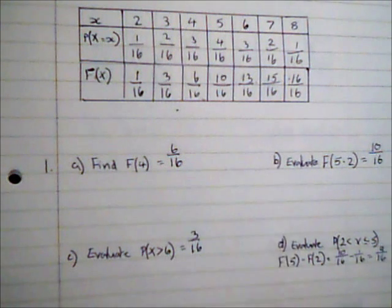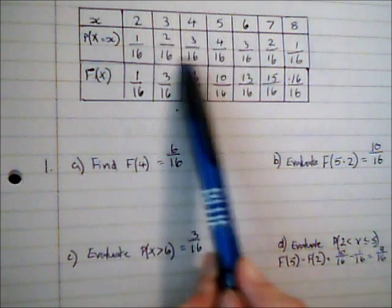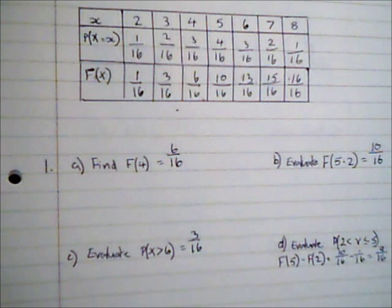Alternatively I could just look at the values that were 3, 4 and 5. So 3, 4 and 5 here and I could just add these three fractions and get my 9/16ths that way.